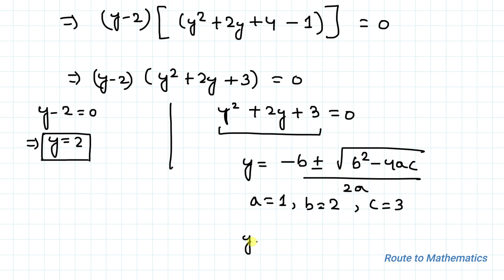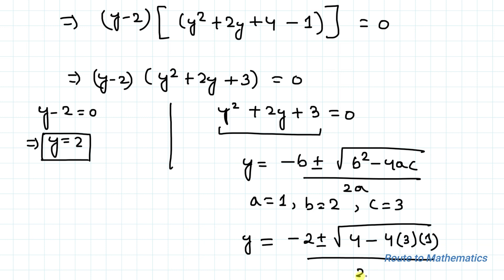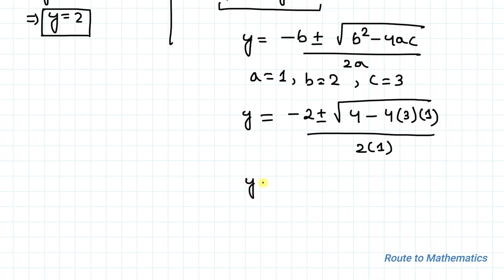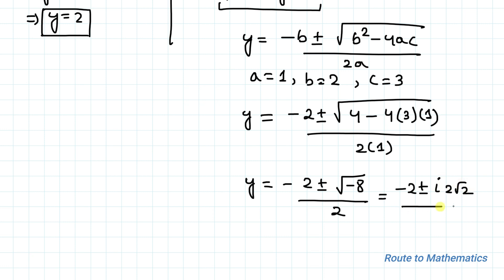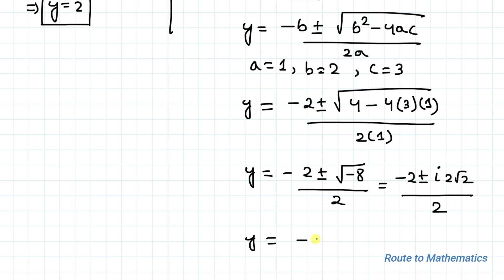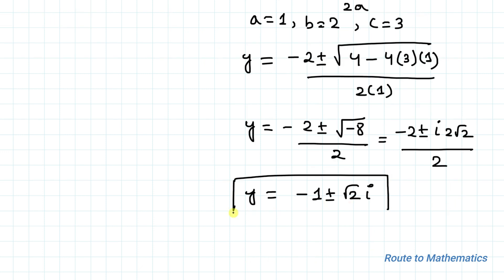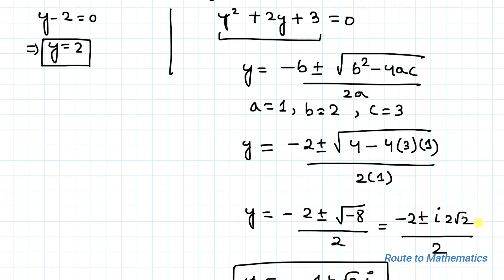Substituting the values of a, b, c: y equals minus 2 plus or minus root of (4 minus 4 × 3 × 1) divided by 2 × 1, which gives y equals minus 2 plus or minus root of minus 8 divided by 2, which equals minus 2 plus or minus 2i√2. Here we are getting y as a complex number. Since we are asked to find real values of x, the only real solution is y equals 2.